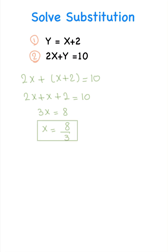Then we have to plug this into the first equation in order to solve for y. We're going to write down y equals 8 over 3 plus 2 over 1. We're going to choose one denominator, which is going to be 3, so we're going to have 8 plus 6. Y is going to be equal to 14 over 3.